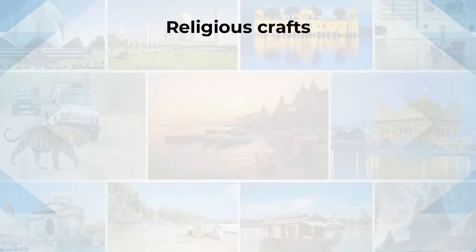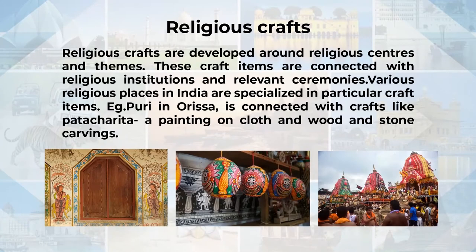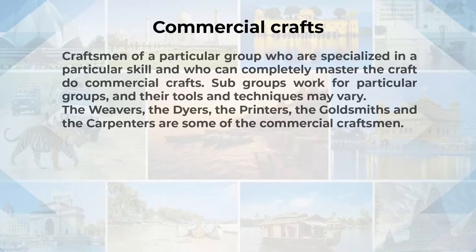The second category is religious crafts, which are developed around religious centres and themes. These craft items are connected with religious institutions and relevant ceremonies. Various religious places in India are specialised in particular craft items. For example, Puri in Odisha is connected with crafts like Patra Chitra — a painting on cloth — and wood and stone carvings. The third category being commercial crafts, done by craftsmen of a particular group specialised in a particular skill who can completely master the craft.